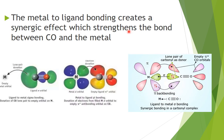This metal-to-ligand bonding creates a synergic effect and strengthens the bond between CO and the metal. Sigma bonding occurs by donation of the lone pair of electrons from the carbon of CO to the metal, while pi bonding is created by back-donation of electrons from the filled d orbitals of the metal to the vacant anti-bonding orbitals of carbon monoxide. This is called backbonding, or synergic bonding.